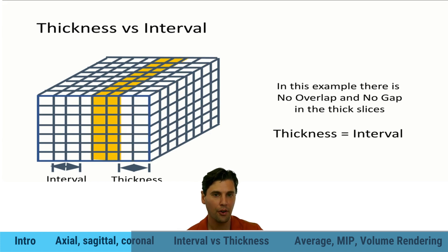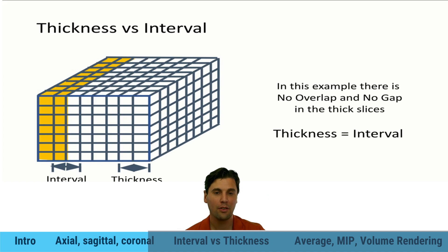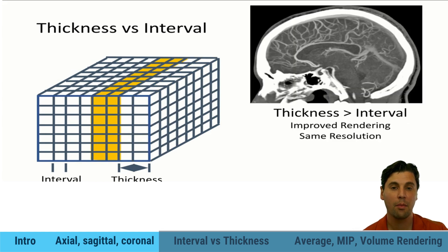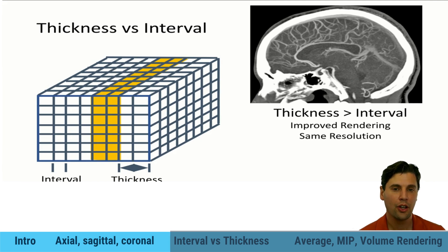When the interval equals the thickness, there's no overlap and no gap. This is the most frequently used method. As we step through the volume, the step from slice to slice is the same distance as the thickness of the slice — so interval equals thickness. Sometimes people call that interval the 'stride.' That's the first concept to be clear on. When the thickness is greater than the interval, there will be an overlap between slices. For example, the interval is one voxel unit but the thickness is two voxel units, so you can see the overlap.